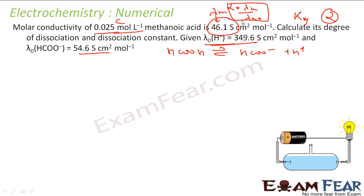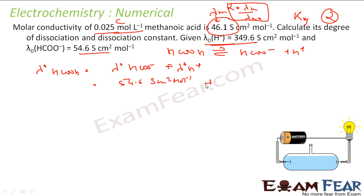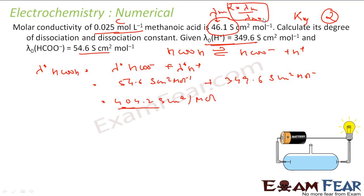Alpha (degree of dissociation) = λm / λm⁰. Using Kohlrausch's law: λm⁰(CH₃COOH) = λm⁰(CH₃COO⁻) + λm⁰(H⁺) = 54.6 + 349.6 = 404.2 S·cm²/mol. The given λm is 46.1 S·cm²/mol.